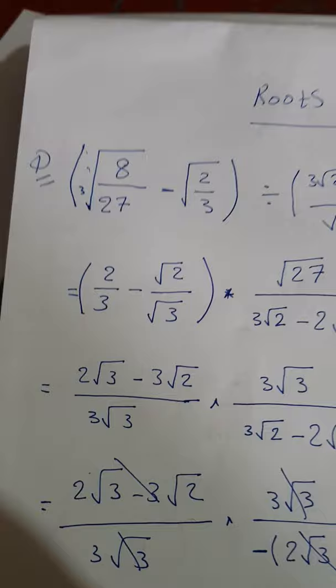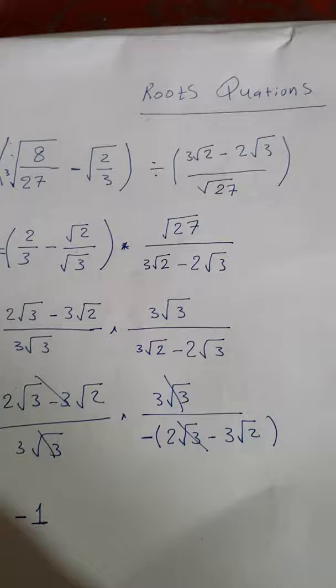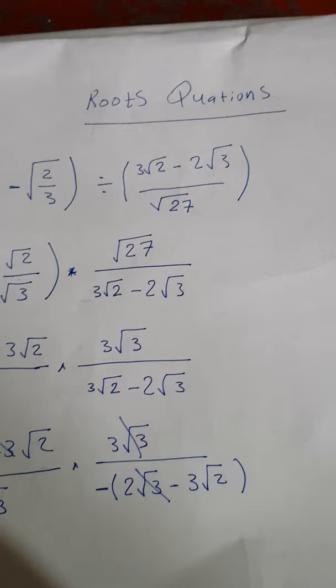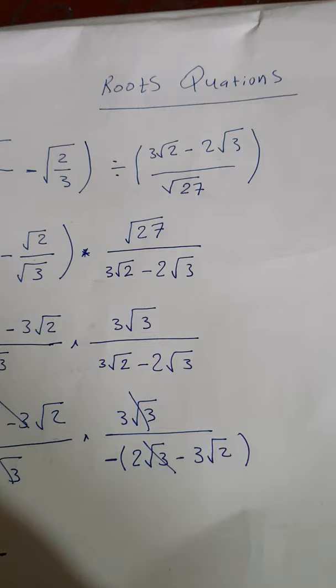Eight over seven, all under the cubic root, minus two over three, all under the square root. Divided by: three squared under the square root, minus two cubed under the square root over twenty-seven under the square root.